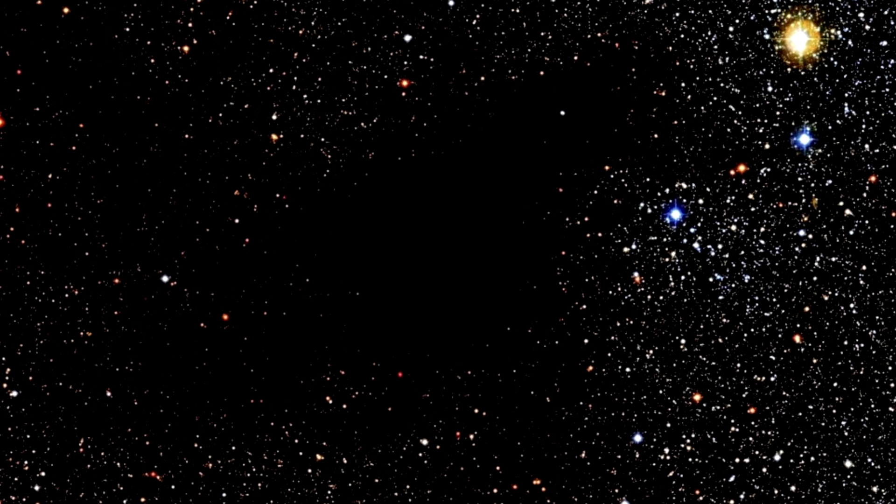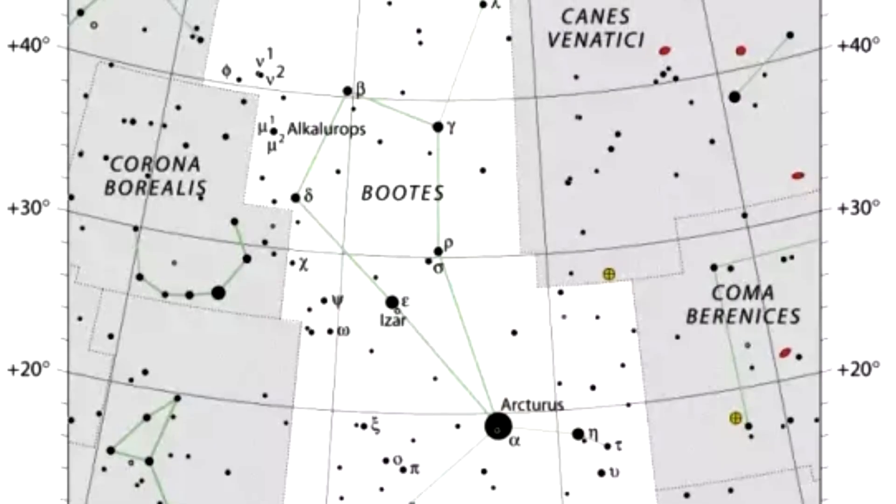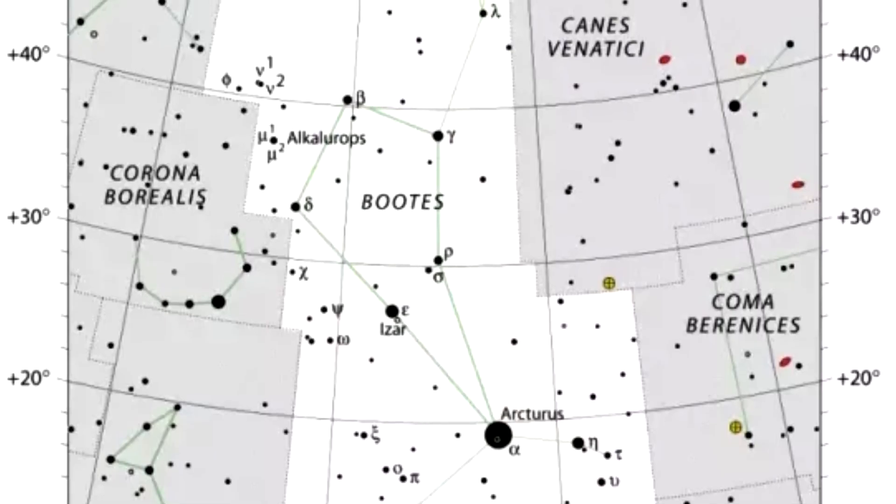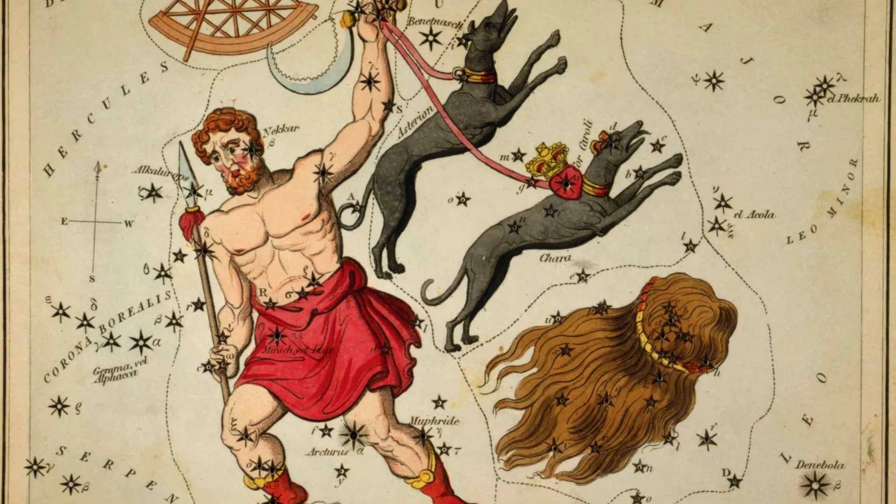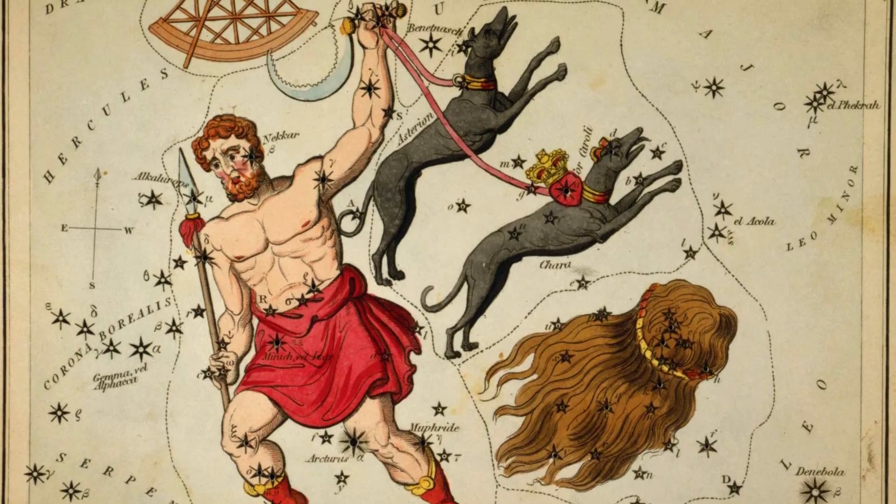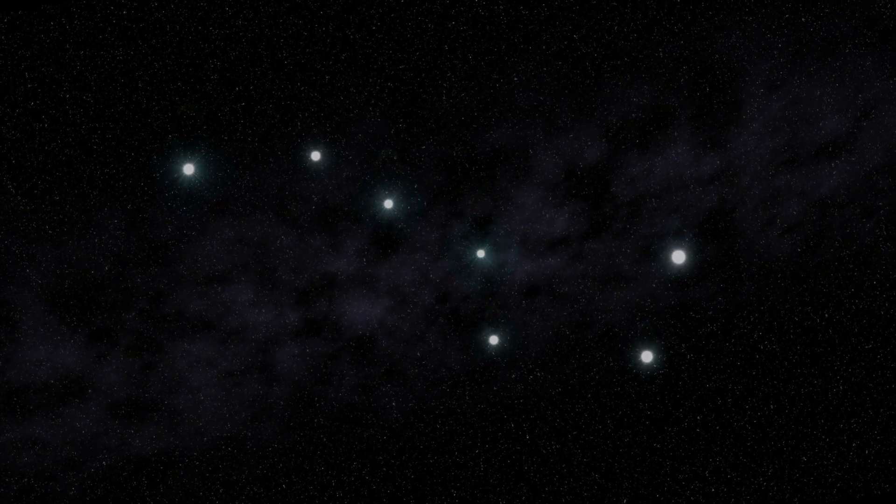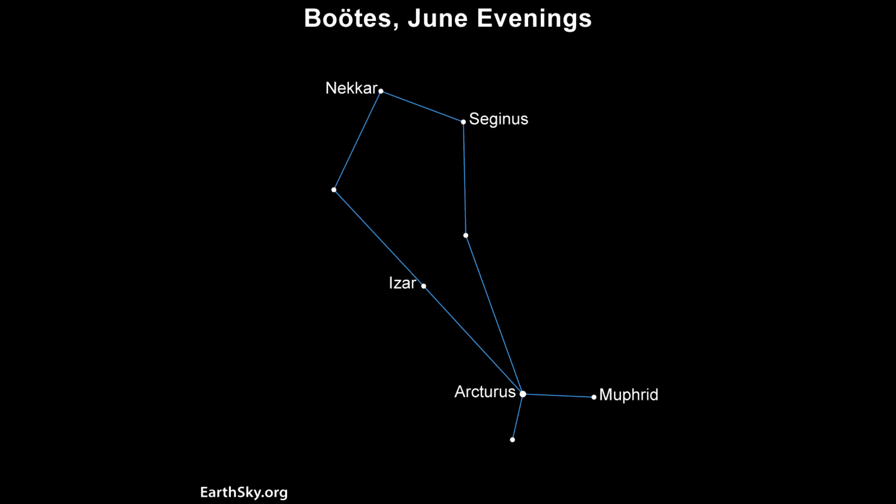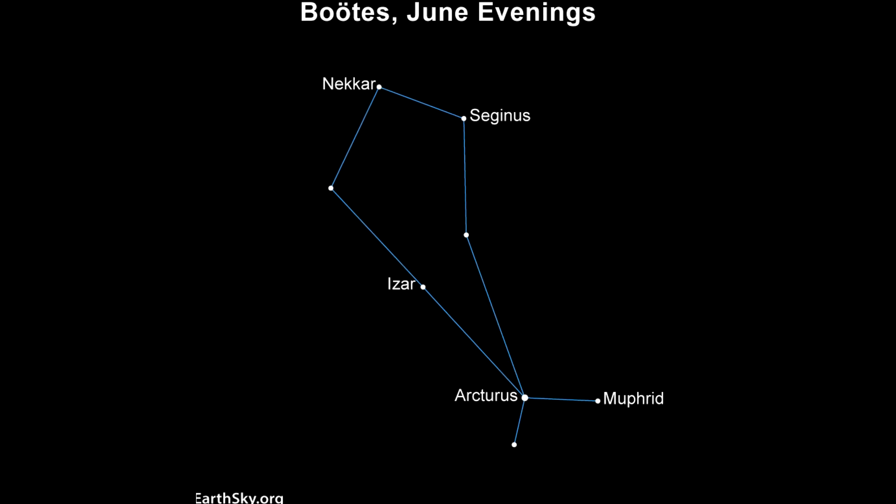At first, people called this large, empty space the Great Nothing. However, it was later renamed the Boötes Void because it seemed to be located in the constellation of Boötes. Boötes is a figure from mythology who is often depicted as a herdsman guiding the plow, also known as the Big Dipper, around the North Pole in the night sky. The Void got its name from its apparent position in relation to this constellation.